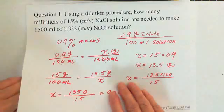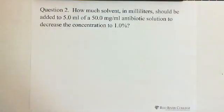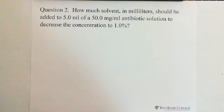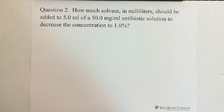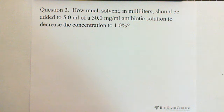This is question one. Question two: How much solvent in milliliters should be added to 5 milliliters of 50.0 milligrams per milliliter antibiotic solution to decrease the concentration to 1%? This question is looking for solvent. Because solvent plus solute equals solution.